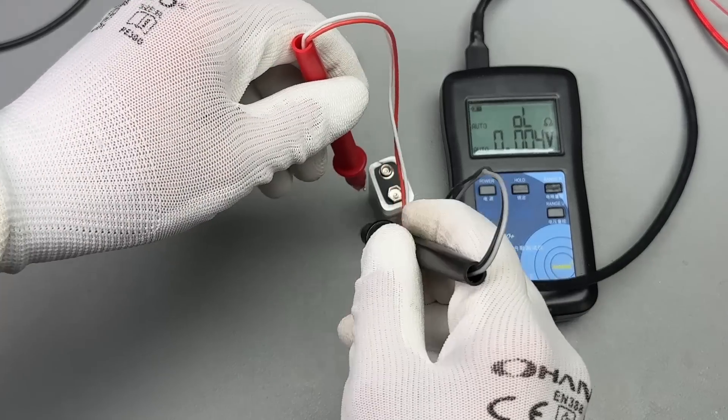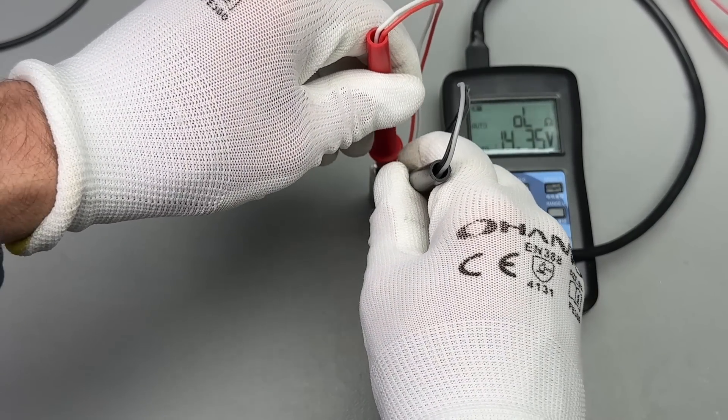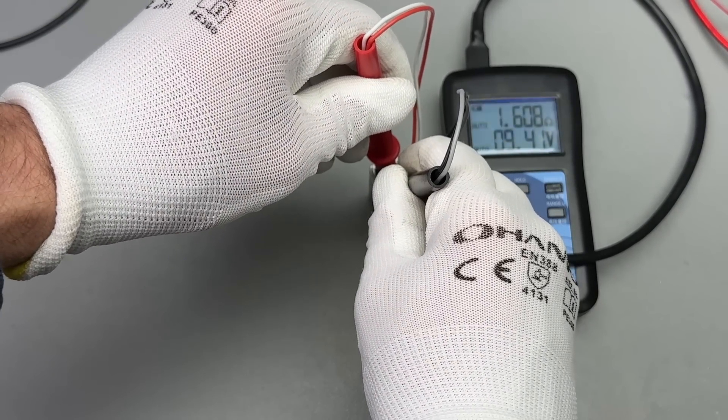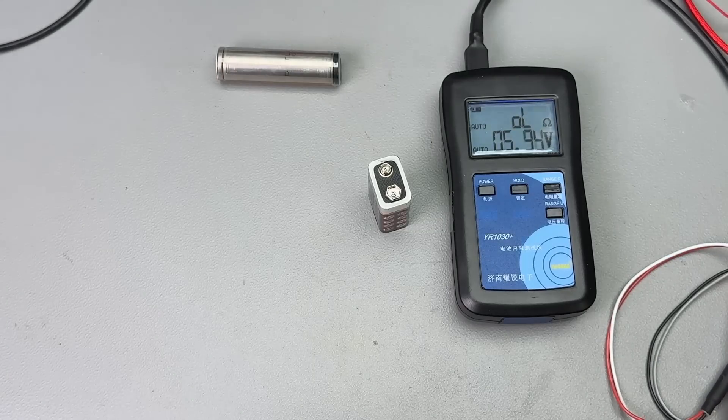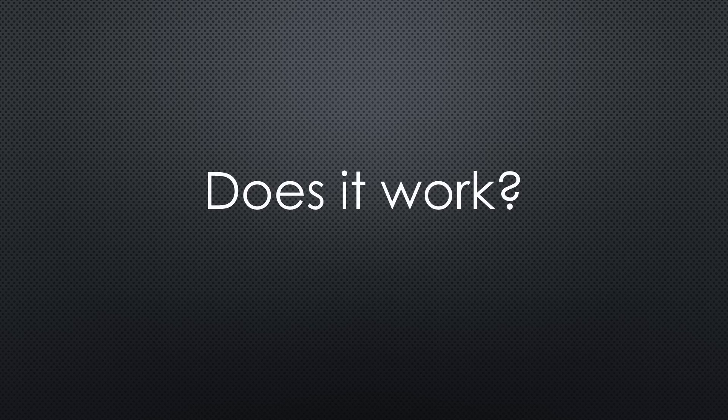Li-ion batteries typically have resistances in the milliohm range. A 9 volt block battery, by contrast, has a resistance of 1.5 ohms, unsuitable for high current applications due to excessive voltage drop. But is this measurement dependable?